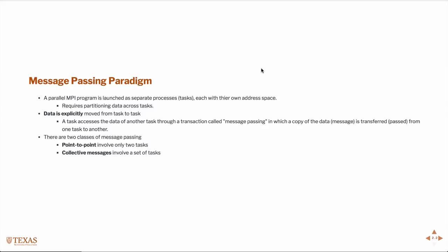These messages can be of two classes. They can be point-to-point, which would involve explicitly sending an item from one processor and receiving it on another. Or they could be collective, which would be sending information from one processor to all processors, or vice versa — from all processors to one processor, or from all processors to all processors. We'll talk specifically about some of the syntax used to do these different types of communication.